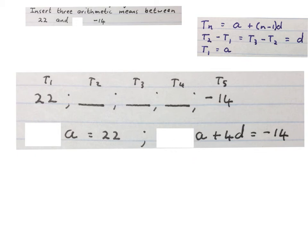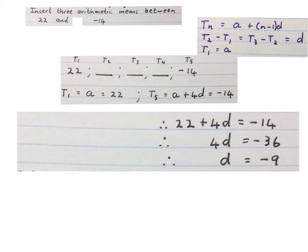Substitute this A with 22 and then solve for D. Firstly we minus 22 on both sides. Get 4D equals minus 36. Then we divide by 4 on both sides. We get D equals minus 9.